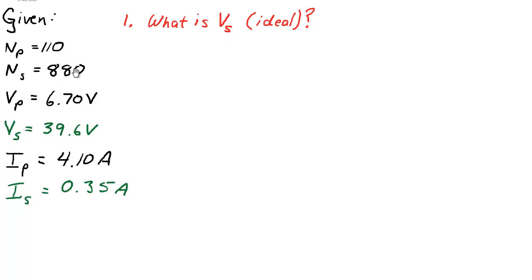Here I've presented the given information on the left. We have been told that the primary number of windings is 110 turns. The secondary number of windings or coils is 880. So right away we see that this is a step up transformer since the number of windings is increasing.